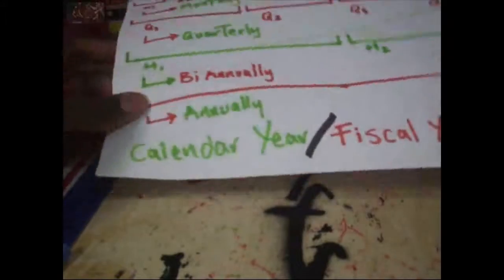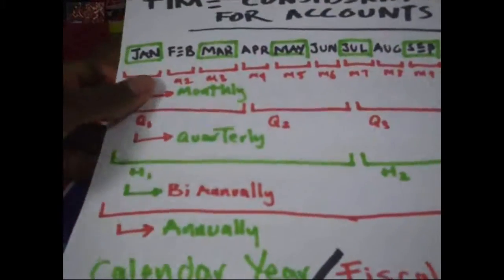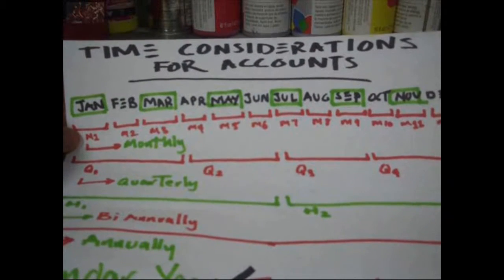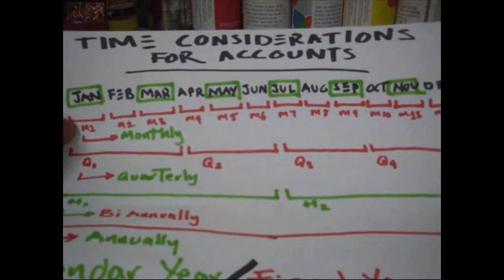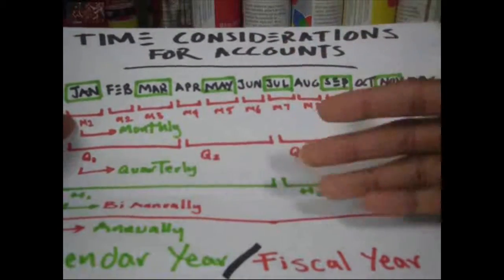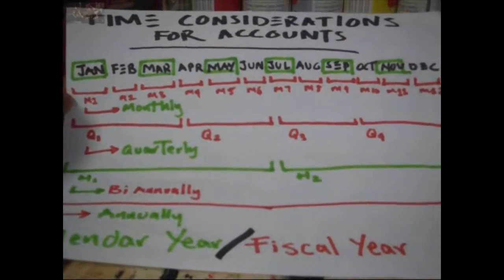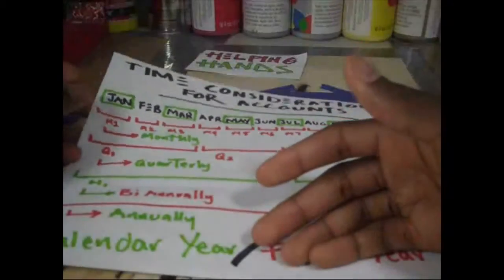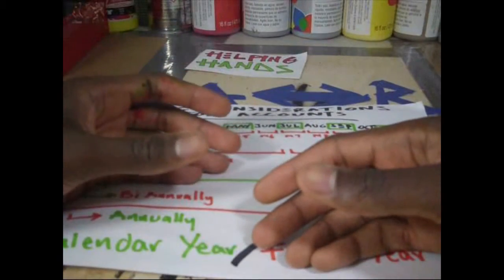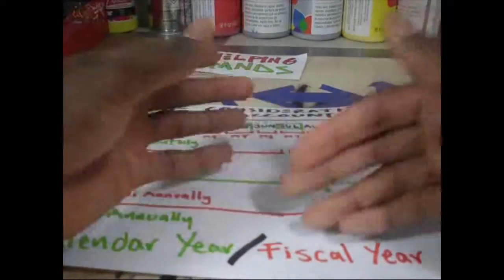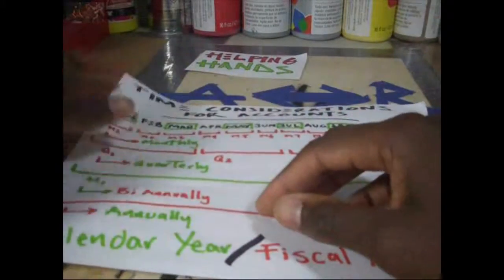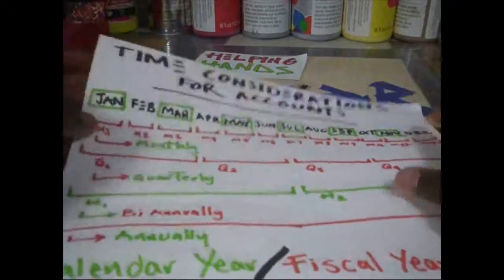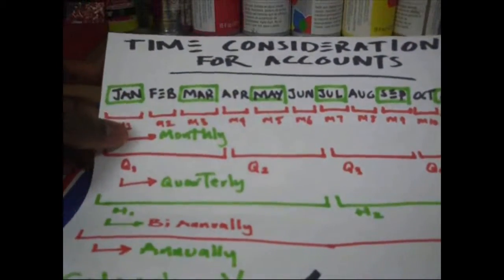So let's go right back to time considerations for accounts: fiscal year, calendar year. When we talk about periods and how we separate them, we want to be standard. We want to follow set guidelines so that when I look at your financial statements and someone else's, I'm able to compare apples to apples.